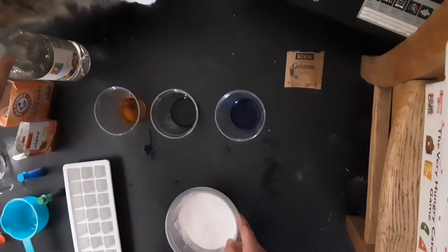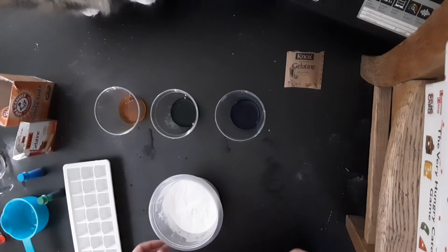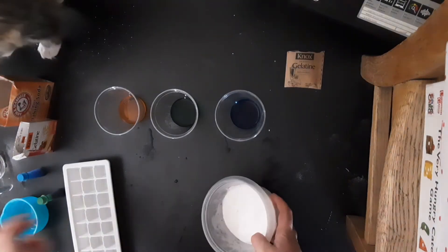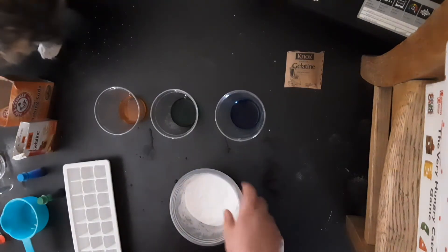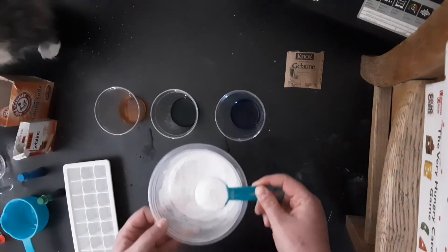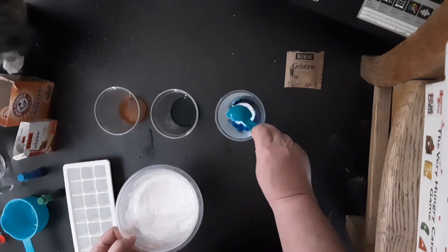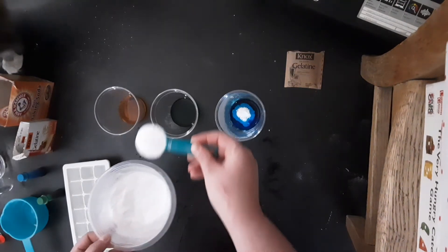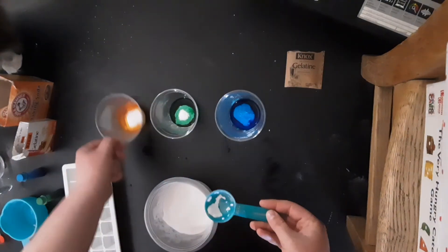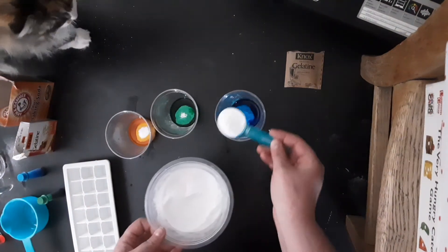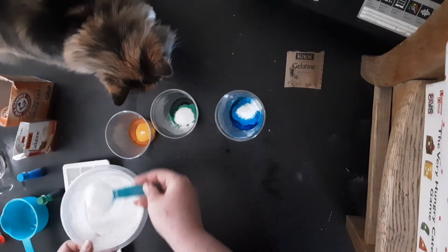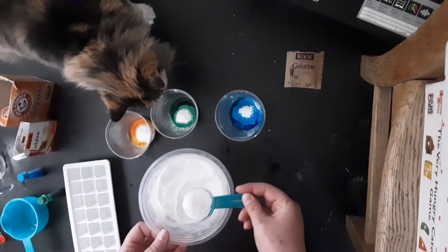Now this is a fun part. We are going to divide the baking soda glycerin mixture. I'm using a tablespoon. I'm going to do one tablespoon with the blue, one tablespoon with the green, one in the yellow, and I'm going to keep doing that until they all have got in their allotment.